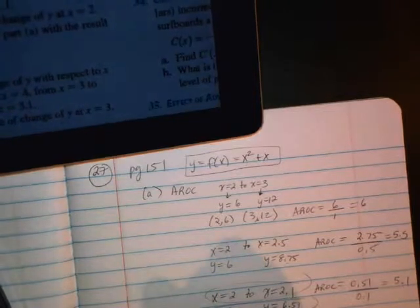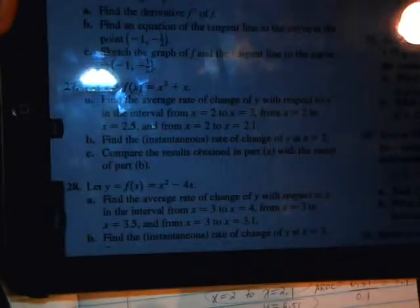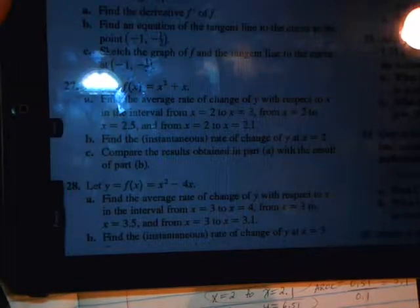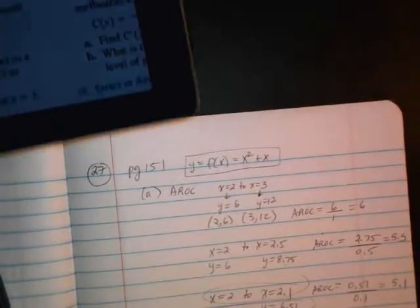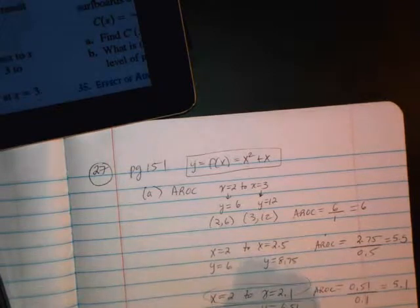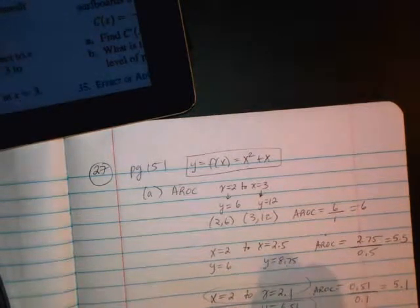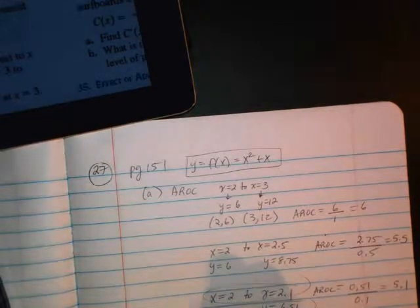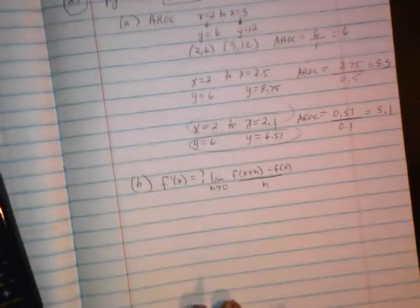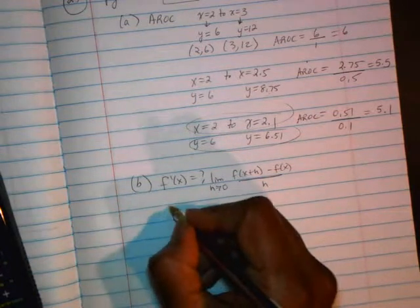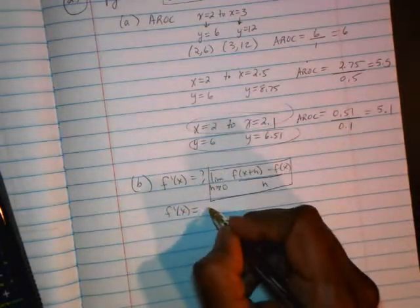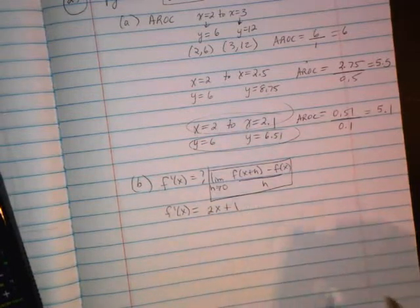But in part b, it says find the instantaneous rate of change. That is the derivative of the function. Now you can do the four-step process, find f(x + h) minus f(x) all over h, take the limit as h goes to 0. But I've done enough examples, so I'm going to just tell you the answer. You can take a moment and do the four steps. But you should get this to be the result, 2x plus 1.